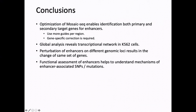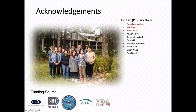In conclusion, in this study we have optimized our single-cell perturbation assays and showed that we can confidently identify both the primary and secondary target genes of enhancers. Using our 500 enhancer dataset, we constructed the regulatory network in K562 cells, finding that enhancers located at different genomic loci converge to regulate the same set of genes. We also showed a potential application of this assay: using it to understand the mechanisms of disease-associated genetic mutations. I want to acknowledge my PI Gary Hong, as well as Daniel, Pei, and Jelly, for their contributions, along with my funding agencies. Thank you.